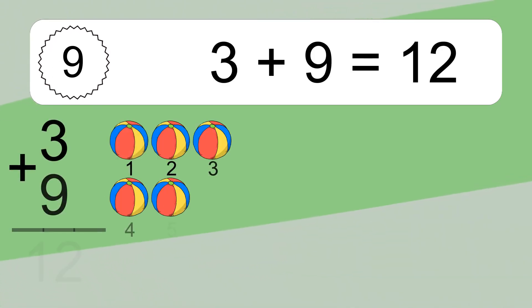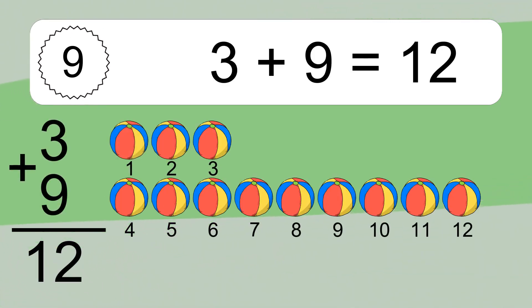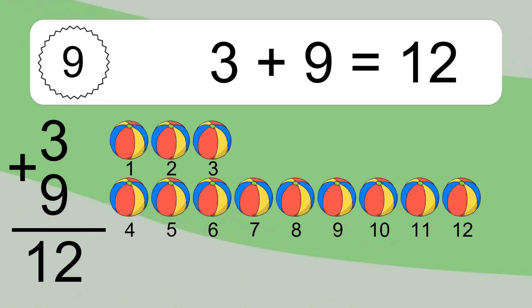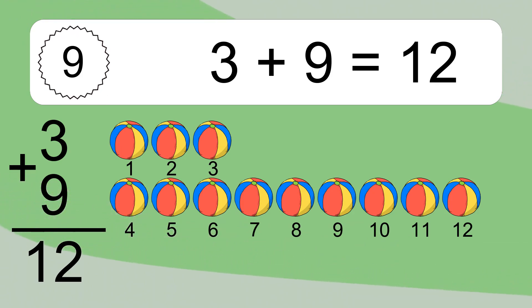3 plus 9 equals what? 3 plus 9 equals 12. Let's count it. 1, 2, 3, 4, 5, 6, 7, 8, 9, 10, 11, 12.